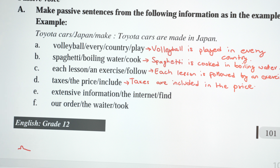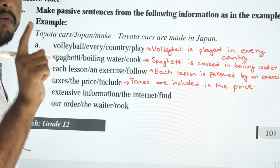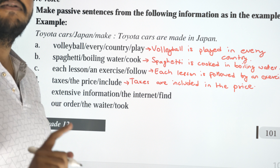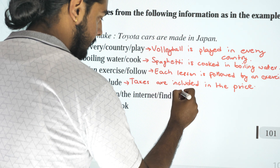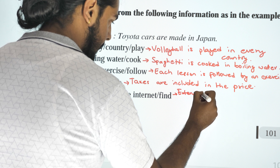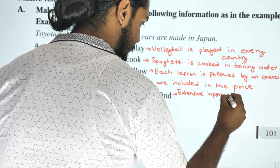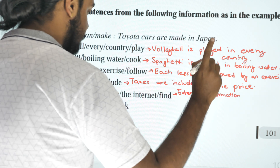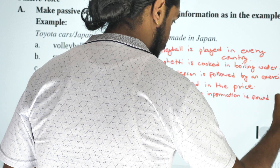Extensive information — the internet — find. Extensive information is found on the internet. 'Information' is uncountable. Extensive information is found on the internet.